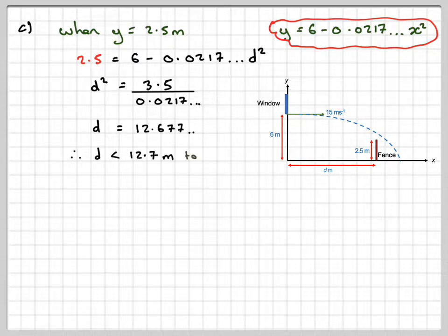And therefore, d will have to be less than 12.7 meters to three significant figures. So what we found there is the maximum point where we can put the fence so that the ball actually clears it.